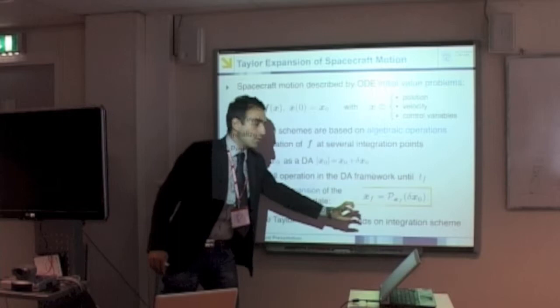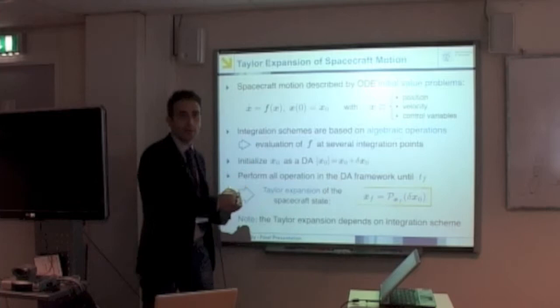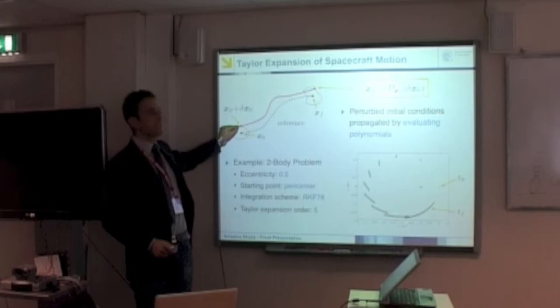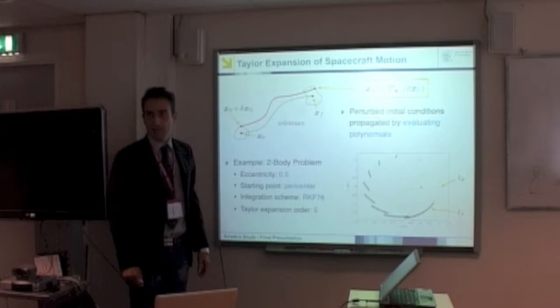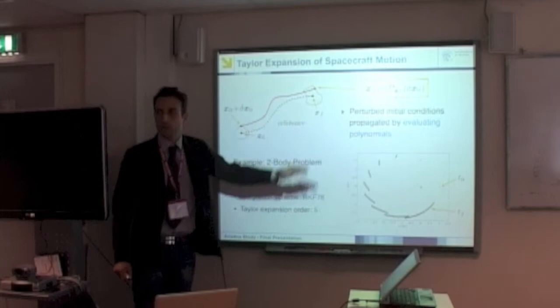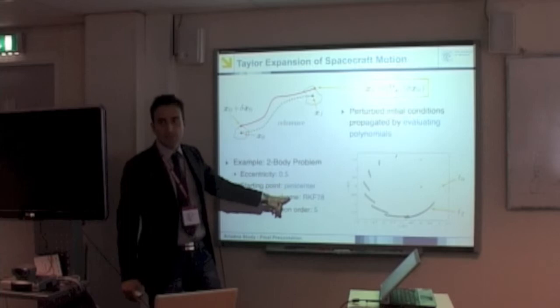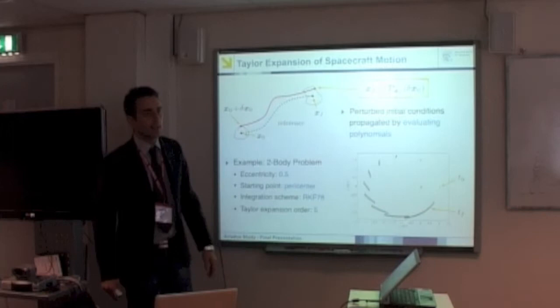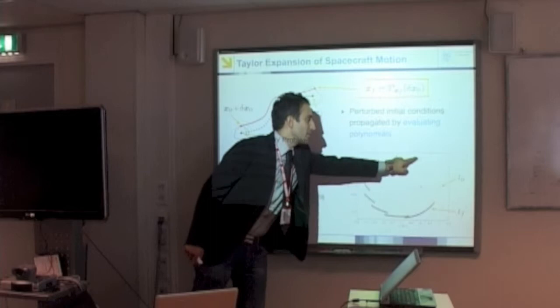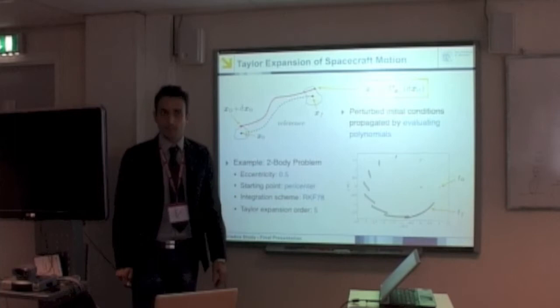So if we have a displaced initial condition, we evaluate this polynomial to obtain the new solution of the ODE, and this can be used to propagate initial conditions. Suppose we have a displaced initial condition and we want to propagate this condition till the final time tf. We can substitute the pointwise integration of this initial condition with a simple evaluation of the polynomial. In this way we can propagate sets of initial conditions. As illustrated at the bottom of this slide, using a 0.5 eccentric orbit, we propagate a very small box at the pericenter of the orbit — amplitude of 10 to the minus 2 astronomical units — along the trajectory with a fifth-order expansion of the solution of the ODE.